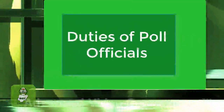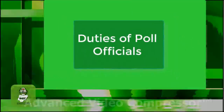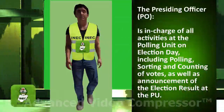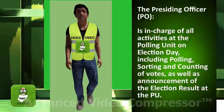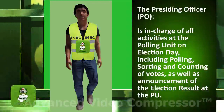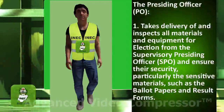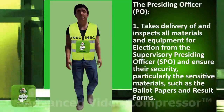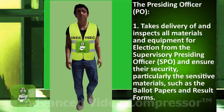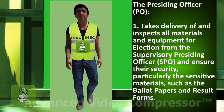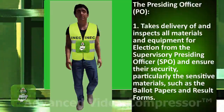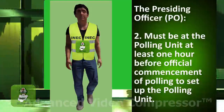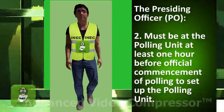Module 2 – Duties of Poll Officials. The Presiding Officer (PO) is in charge of all activities at the polling unit on the election day, including polling, sorting and counting of votes, as well as announcement of the election results at the PU. Duty 1: Take delivery of and inspect all materials and equipment from the Supervisory Presiding Officer (SPO) and ensure their security, particularly sensitive materials such as ballot papers and result forms. Duty 2: Must be at the polling unit at least one hour before official commencement of polling to set up the polling unit.